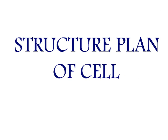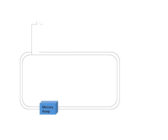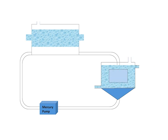First of all we will discuss the structure plan of the electrolytic cell. The electrolytic cell is composed of two chambers: the upper portion, or electrolytic cell, and the lower portion, or denuder. Titanium anodes are hanged in the upper electrolytic portion, while a flowing layer of mercury at the bottom acts as cathode.